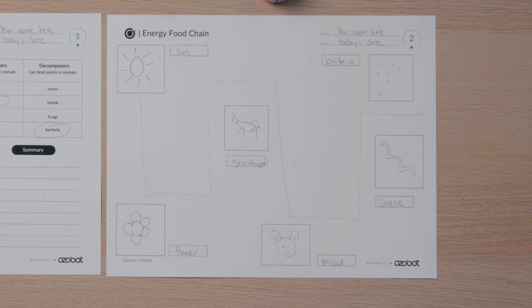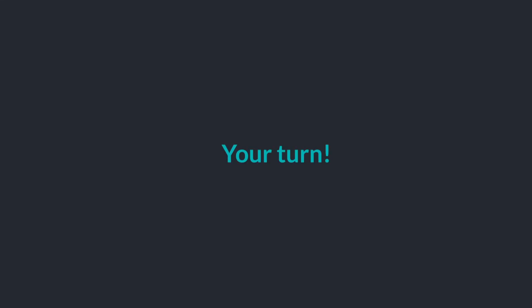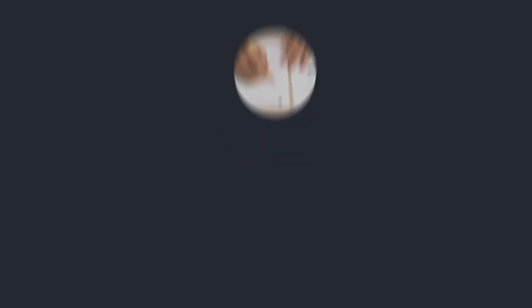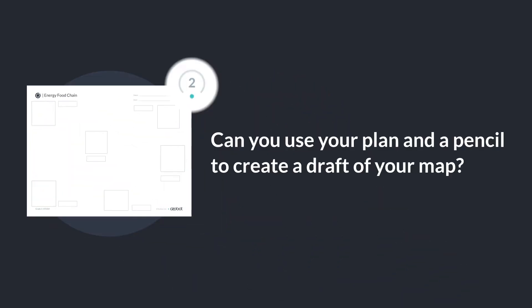Since my map needs to have lines for my bot to continuously travel along, I drew lines around the boxes. Can you use your plan and a pencil to create a draft of your map?